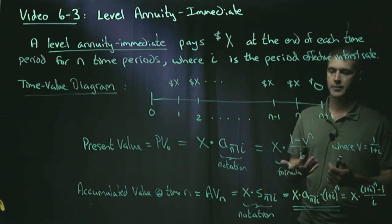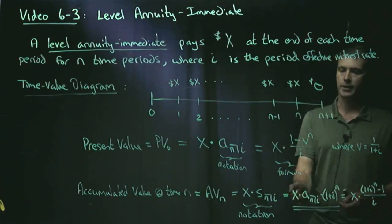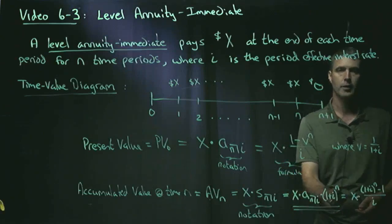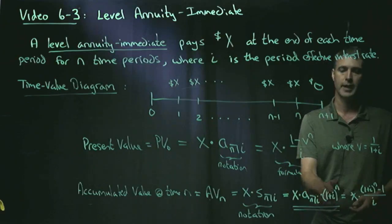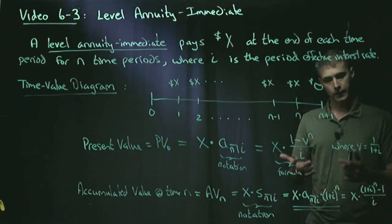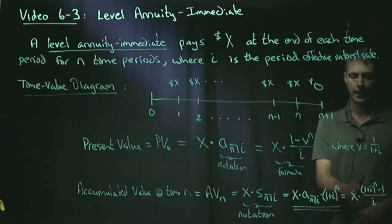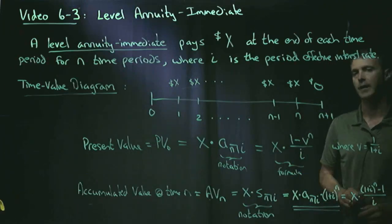And the way we calculate it is very simple. We take our present value, X times A angle N at I. That's our present value. Push forward N periods by 1 plus I to the N. If you like, you can take the formula up here, multiply it by 1 plus I to the N, and get this formula over here at the end.